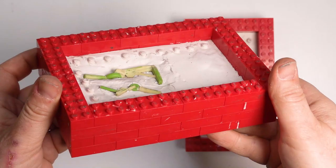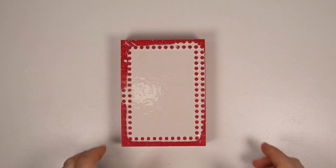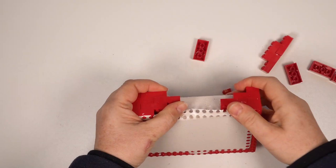A release agent is applied and the second side poured following the same procedure as before. With the silicone cured the molds are opened for the first time and the masters are removed leaving a detailed impression behind.